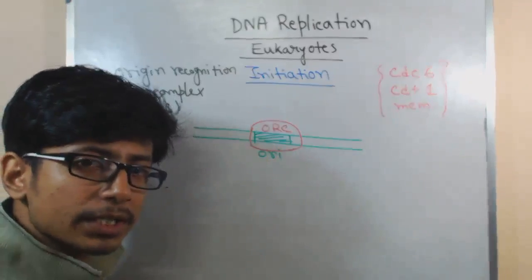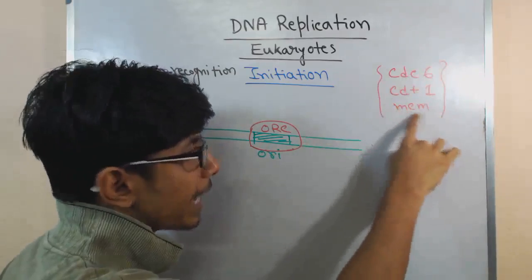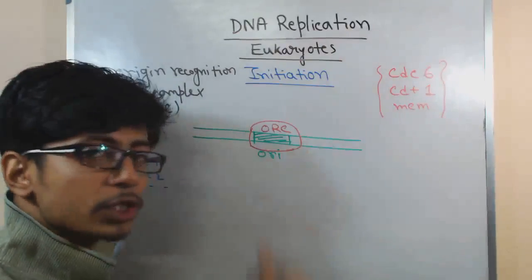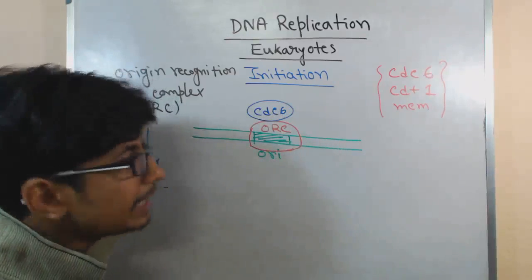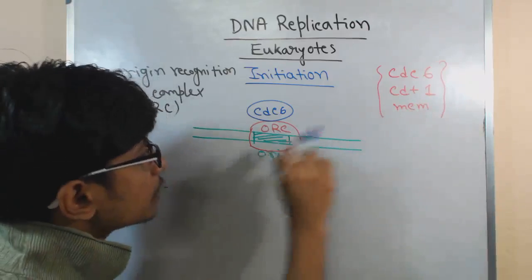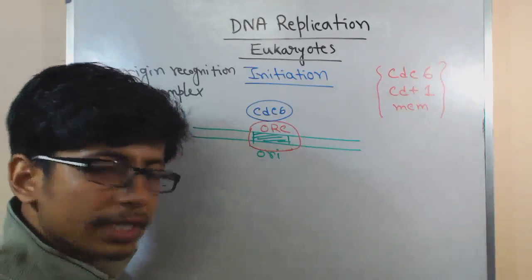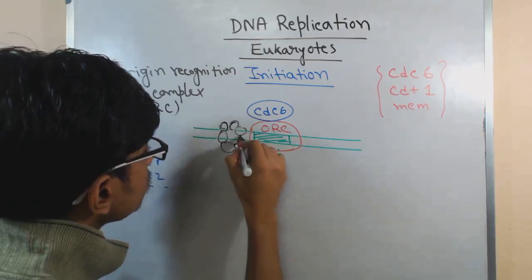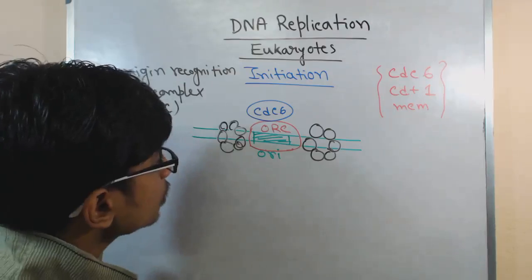Once ORC noted the origin of replication and attached with it, this ORC along with the ORI region acts as the scaffold for the attachment of other proteins like CDC, CDT, and MCM. CDC6 comes in there first, then they will bring CDT1 and MCM. CDT and MCM they bring twice - two CDT and two MCM - because this DNA will melt and they need to produce two different forks. So they require two sets of each of the CDT and MCM.